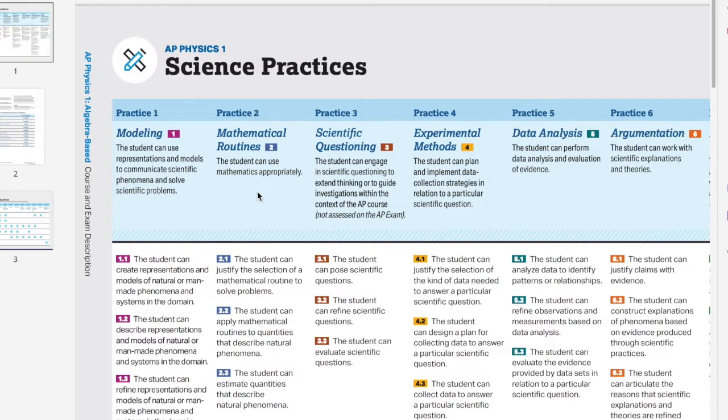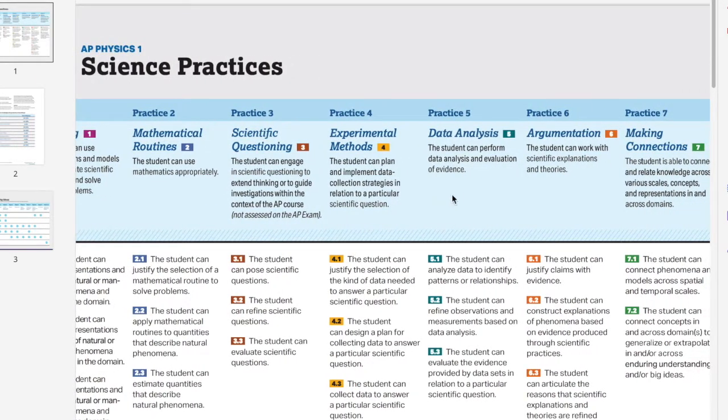Practice four will be experimental methods. In this class we will be doing a few different experiments and we will be using those experiments to derive equations and relationships. And so these experimental methods will be fairly prevalent. Practice five will be data analysis. And while this is a pretty significant point, it's not going to be one of our biggest. We're going to be analyzing data, but a lot of the ways that we analyze that data will be through our experimental methods and through our mathematical routines.